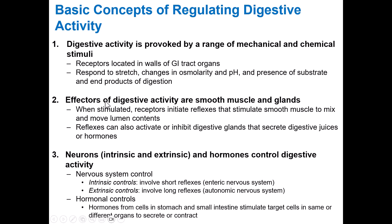The basic concepts of digestion regulation: your digestive activity is stimulated by different types of mechanical and chemical stimuli because of food. Food stretching the GI tract is biomechanical stimulation, and the chemical composition of the food itself is monitored and can trigger digestive processes on or off. The effectors are smooth muscle and glands. Hormones can also control digestive activity — they often come from the GI organs themselves to tell food to continue on or to hold off so that different organs aren't overwhelmed with too much food at one time.